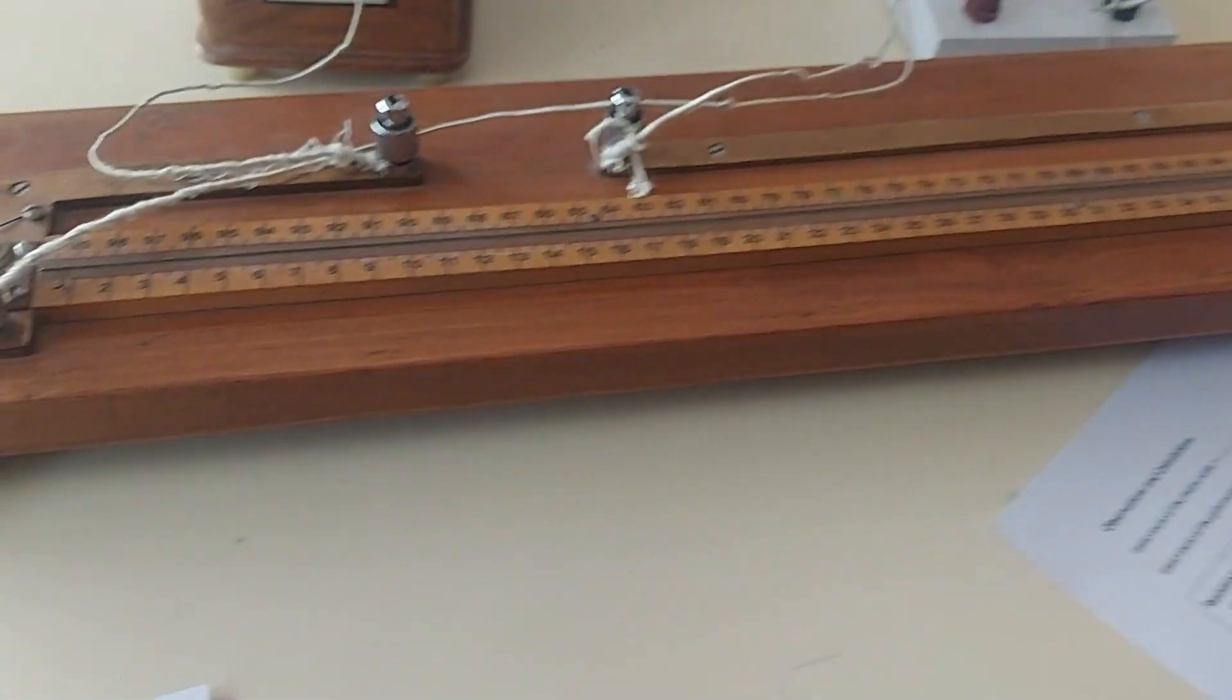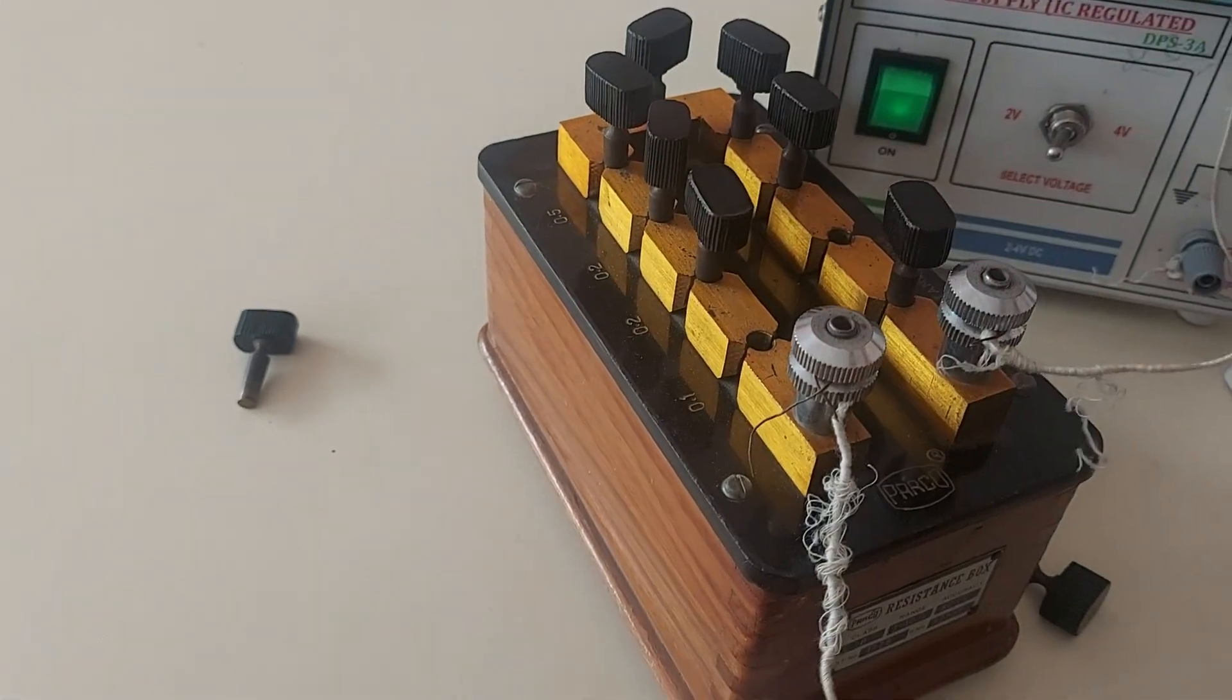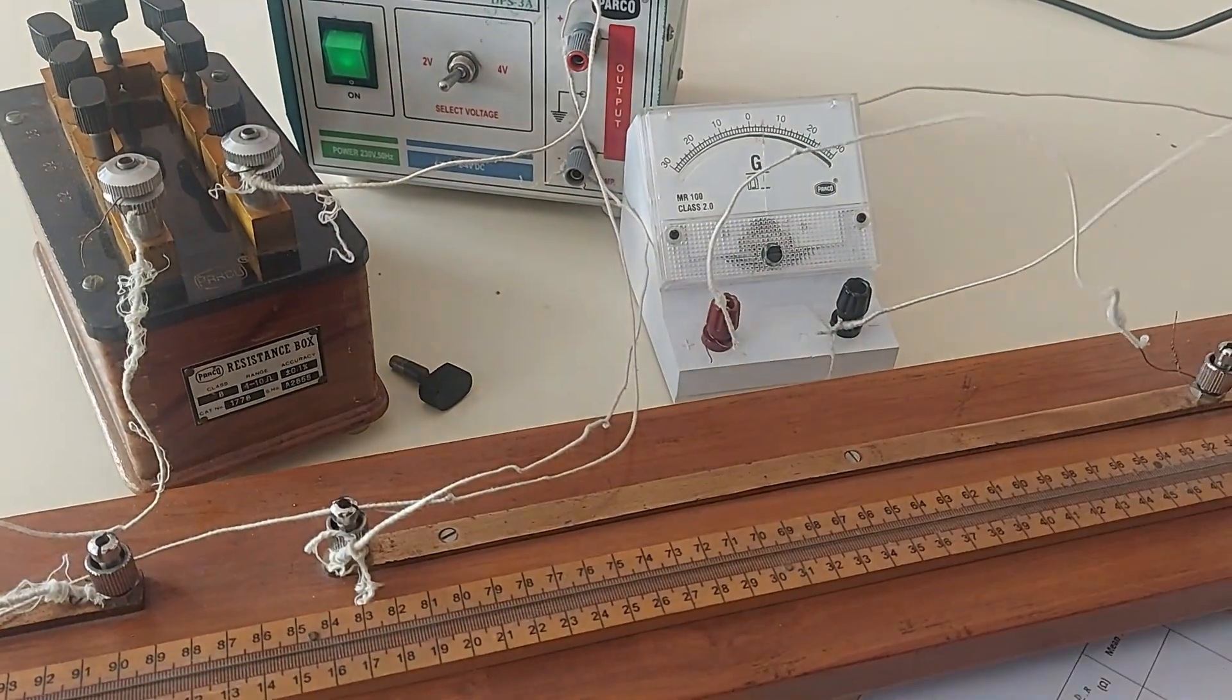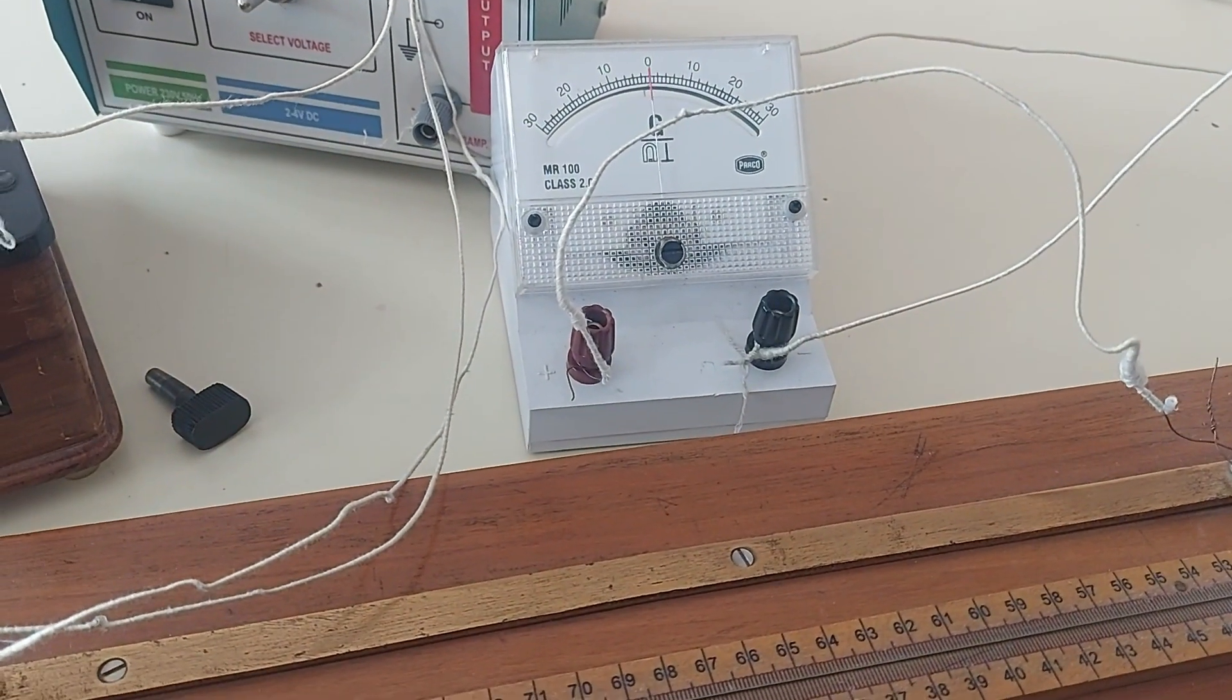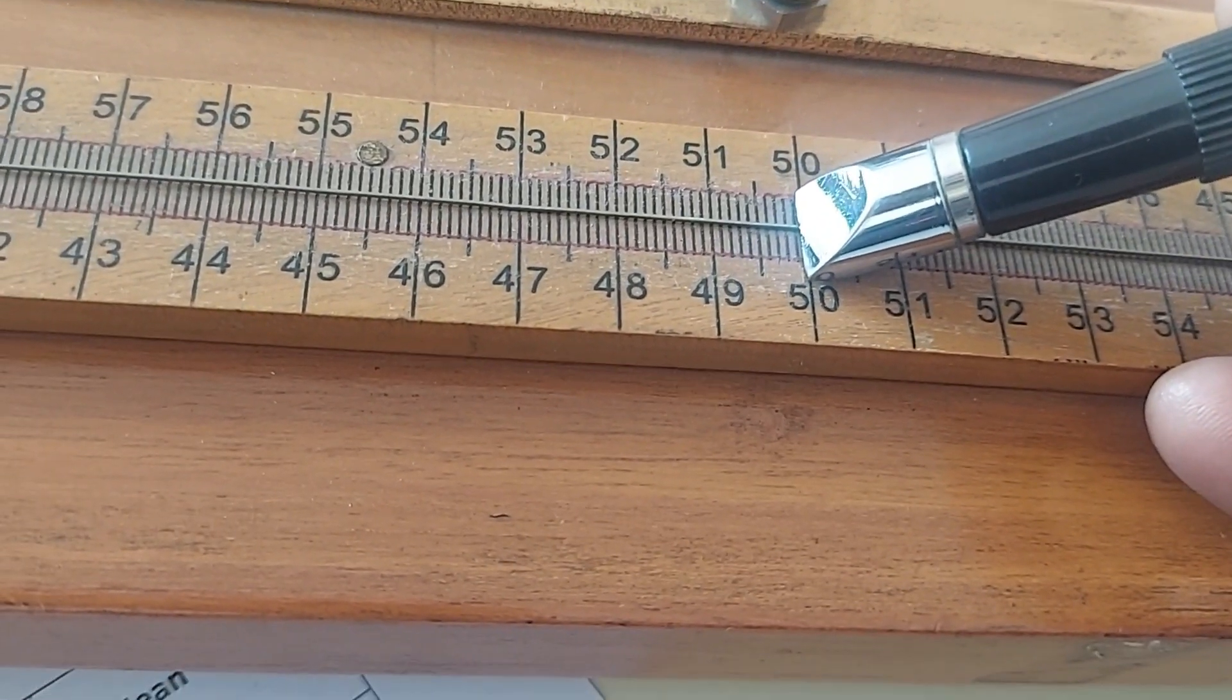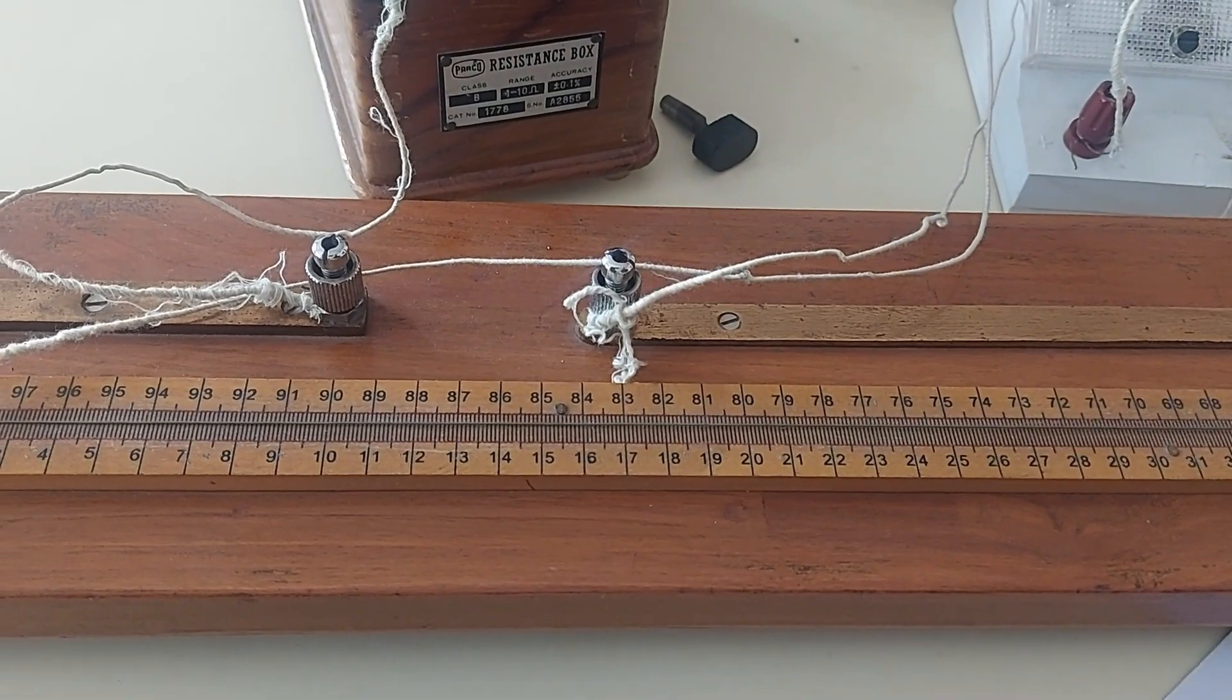Now with the second resistance. We will show you the second one also. Remove 0.1 from the standard resistance box. Take the second reading. Please do keep checking for the deflection on either side. Fifty centimeter. We will calculate later.